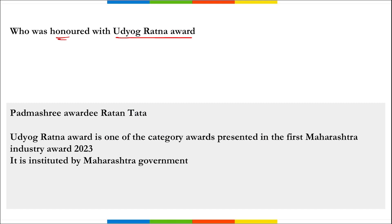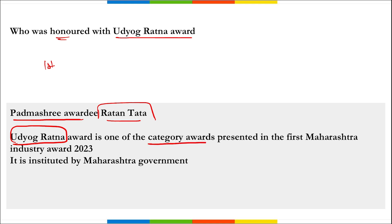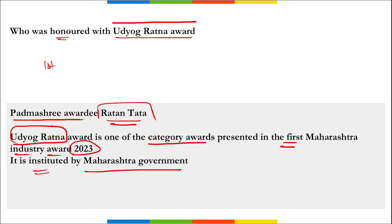In the revision section: Ratan Tata, Padma Shri awardee, was honored with the Udyog Ratna Award at the 1st Maharashtra Industry Awards 2023. The award was presented at his home in South Mumbai by Chief Minister Eknath Shinde and Deputy Chief Ministers Devendra Fadnavis and Ajit Pawar. The honor comprised a shawl, a citation, a memento, and a cheque of Rs. 25 lakh from the Maharashtra Industrial Development Corporation.